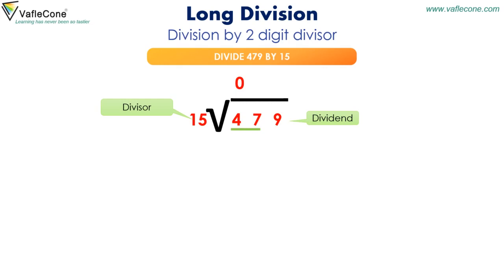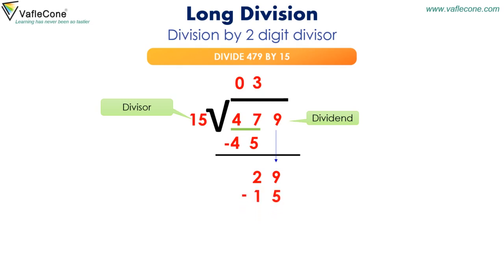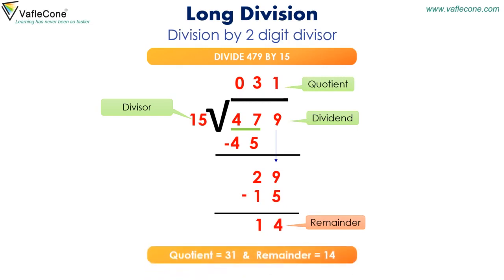Now dividing 47 by 15: 15 into 3 is equal to 45, so 3 is the quotient and 2 is the remainder. Bringing down 9 and dividing 29 by 15: 1 is the quotient and 14 is the remainder. So when we divide 479 by 15, the quotient is 31 and the remainder is 14.